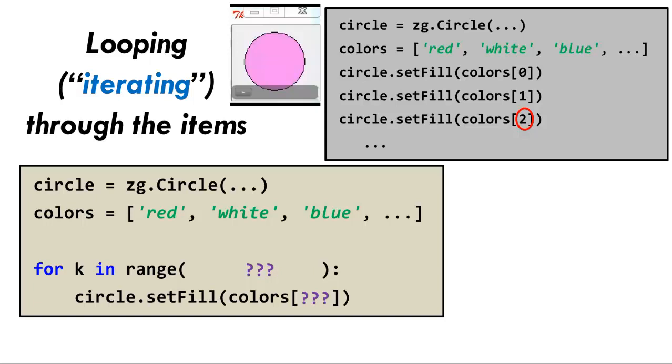Again, what variable do we already have in the code that is going 0, 1, 2, etc. as we iterate through the loop?